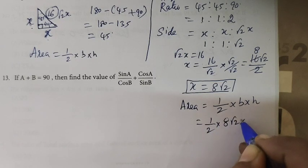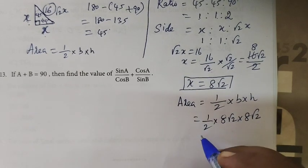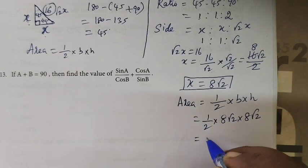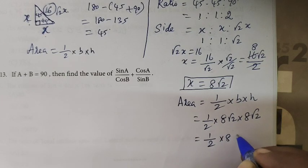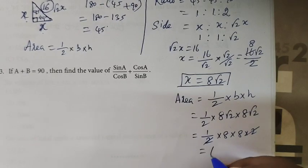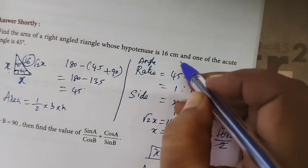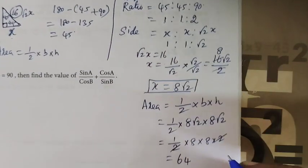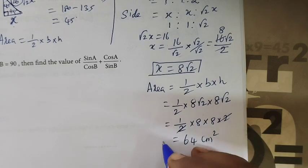Base is 8 root 2 and height is also 8 root 2. So area equals half into 8 root 2 into 8 root 2. Root 2 into root 2 equals 2, so the answer is 64 cm².